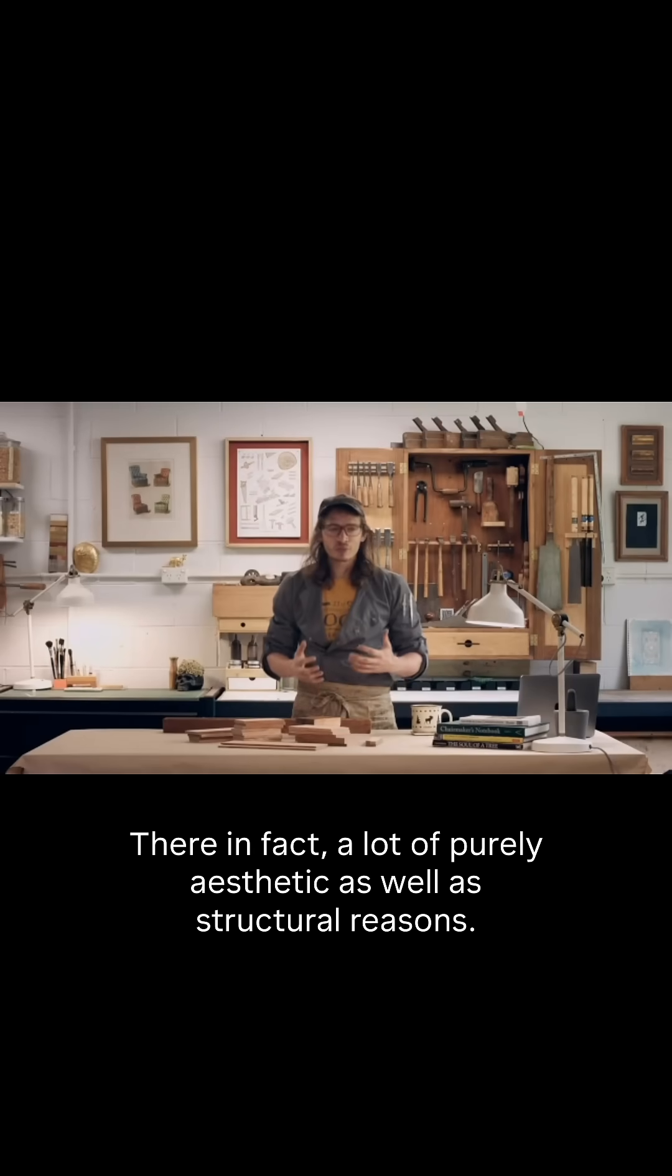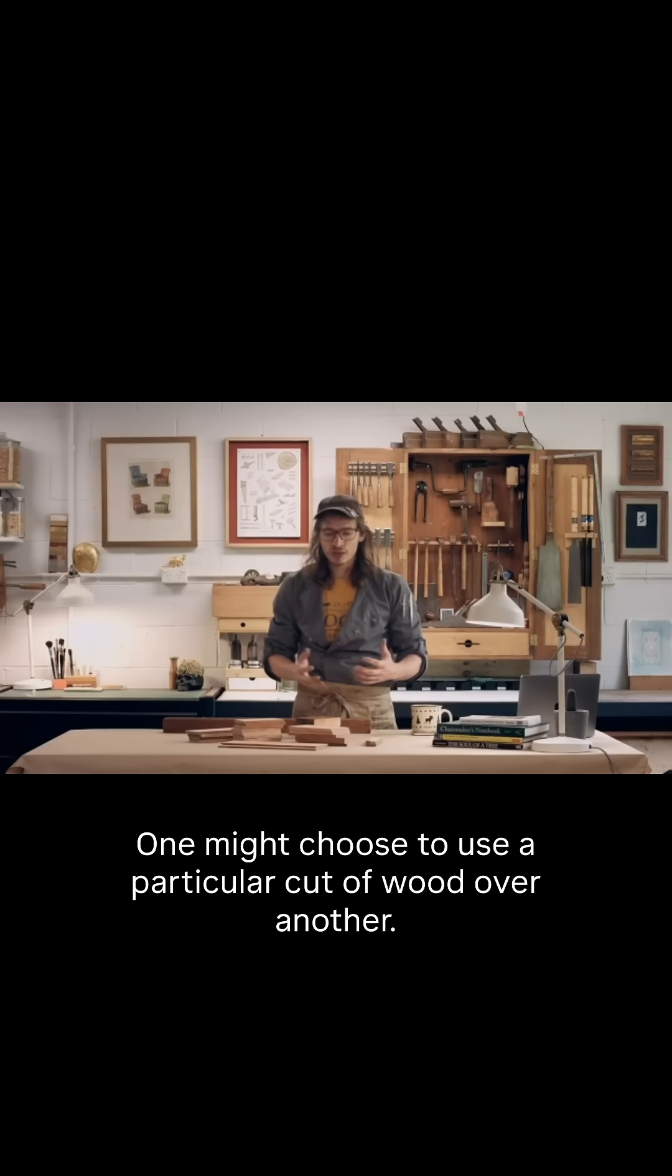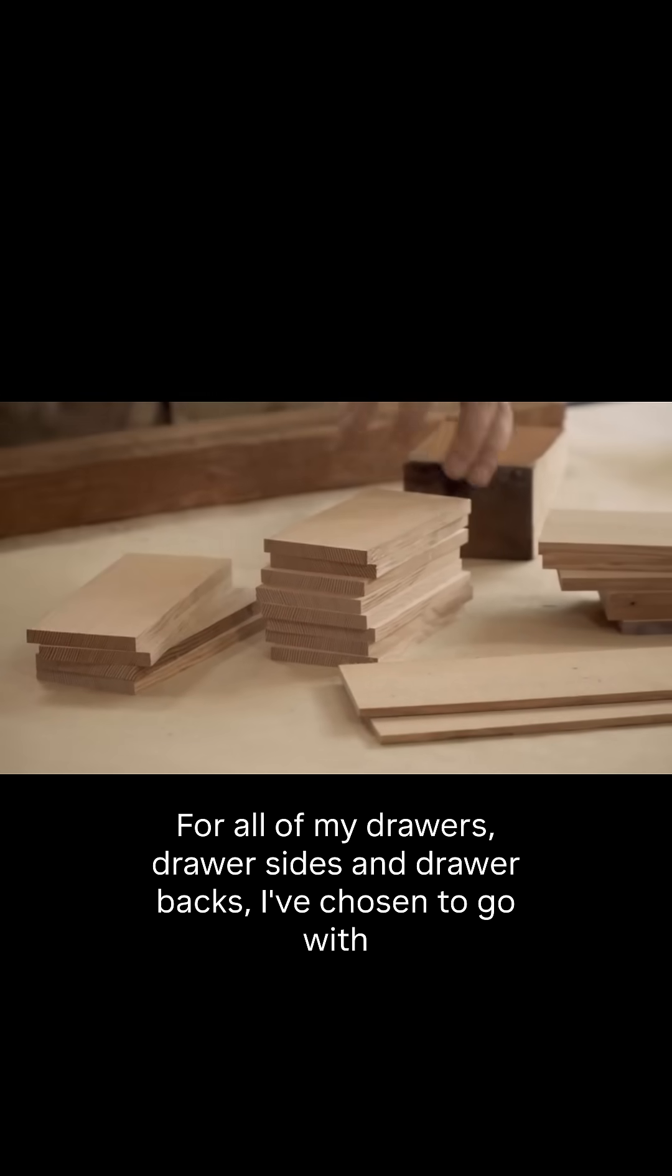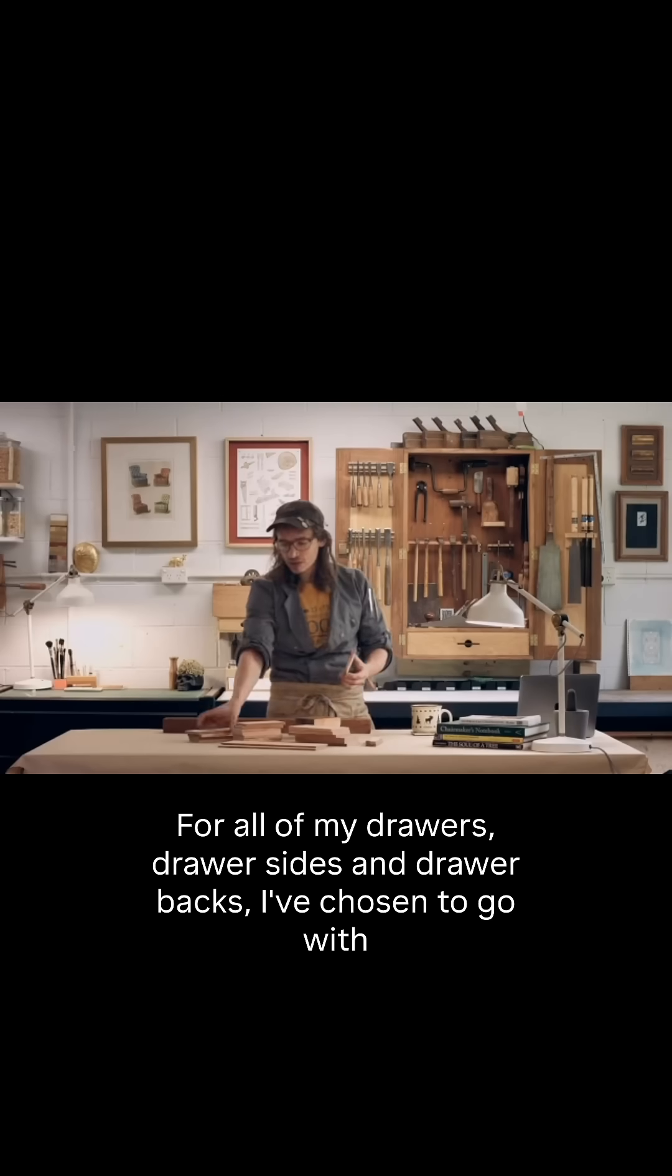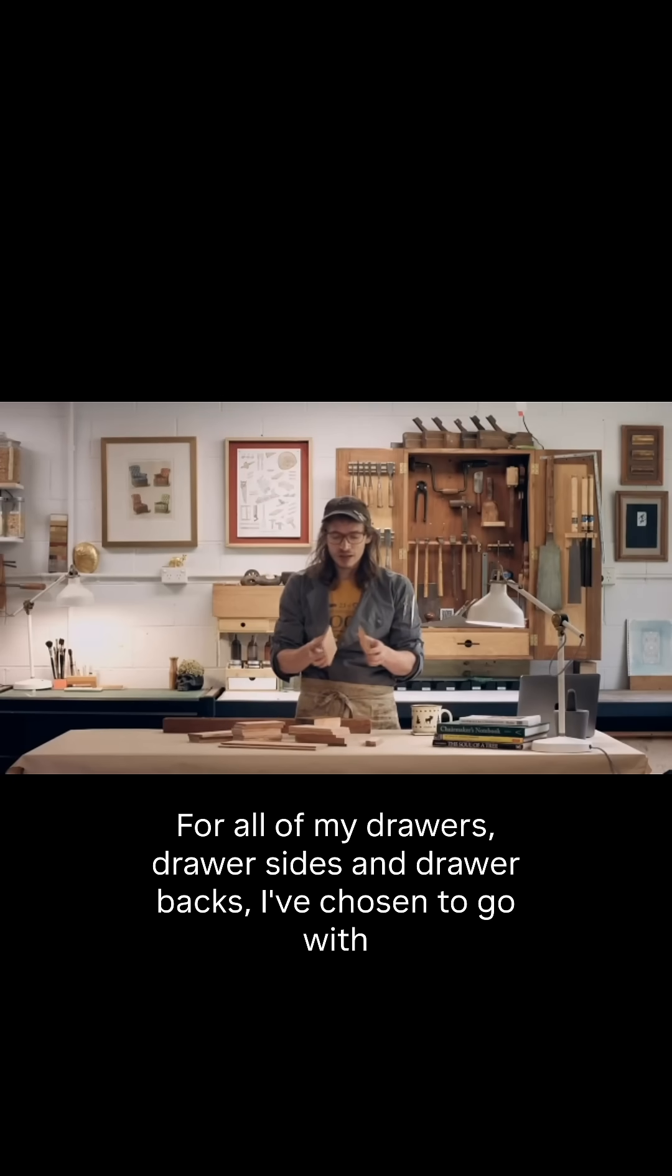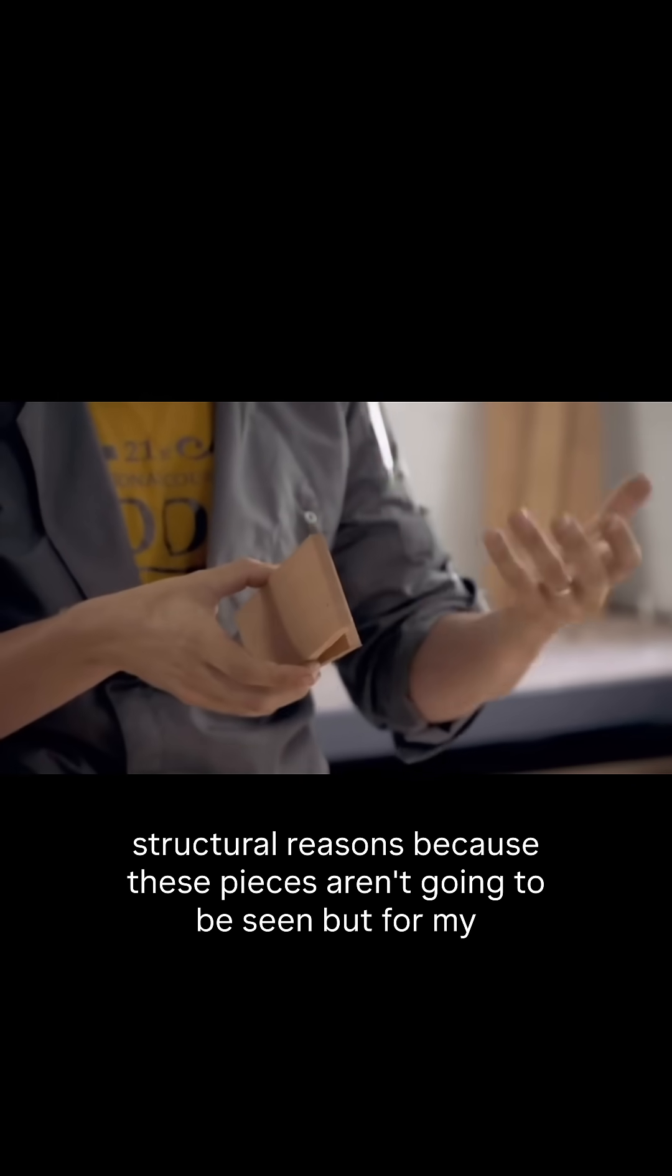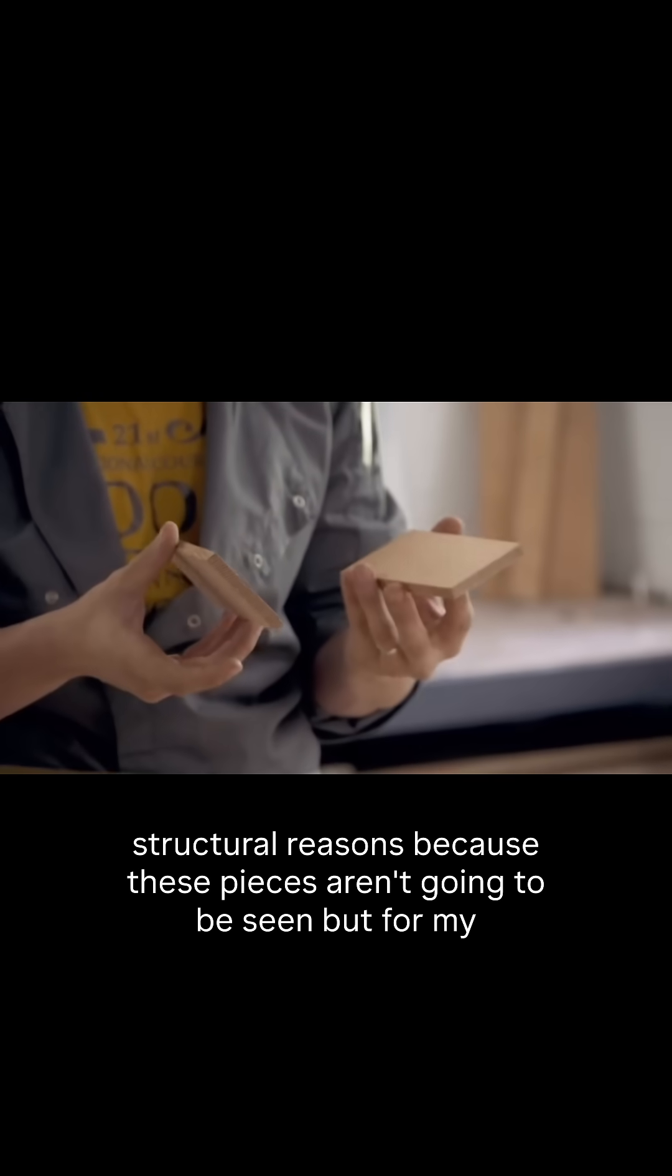There are in fact a lot of purely aesthetic as well as structural reasons one might choose to use a particular cut of wood over another. For all of my drawers, drawer sides and drawer backs, I've chosen to go with this fairly straight grain structure, this quarter sawn timber, mostly for structural reasons, because these pieces aren't going to be seen.